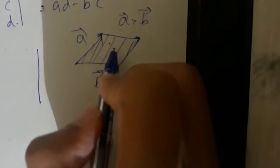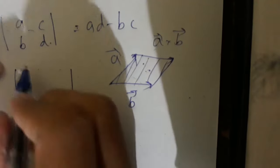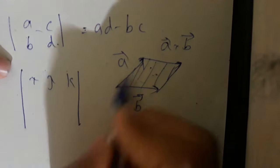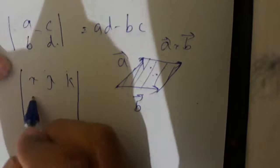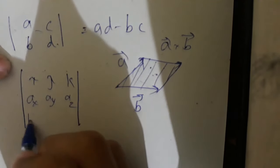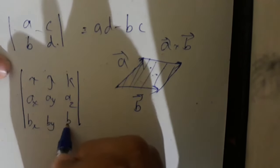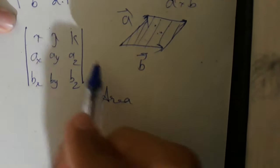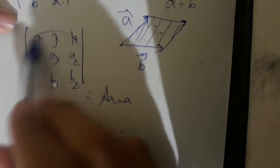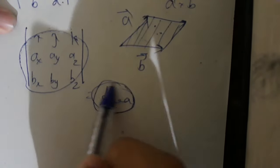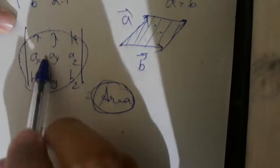This is the area. What is the area? i, j, k, d. A is the component of A, B, B, B. We have to write a determinant here and we have to write an area. This out-of-order multiplication — we have to write an area where we have to write a determinant.